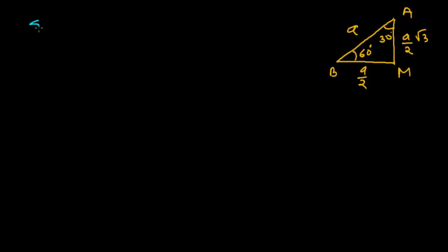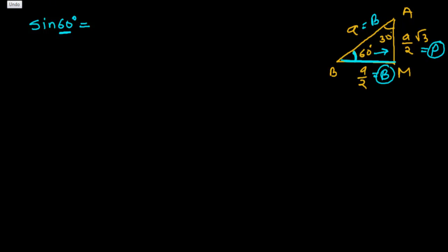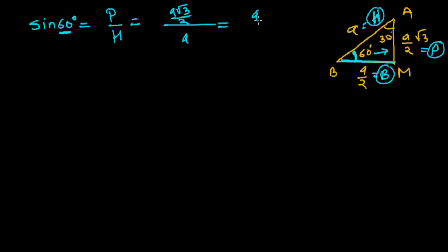First ratio is sin 60. Taking reference angle as 60 degrees, the side opposite to it is the perpendicular, the side on which the angle sits — BM — is the base, and the largest side is the hypotenuse. We call them P, B, and H. Sin equals perpendicular upon hypotenuse, so sin 60 = (A root 3 upon 2) upon A. The 2 comes downstairs, A cancels, giving root 3 upon 2.